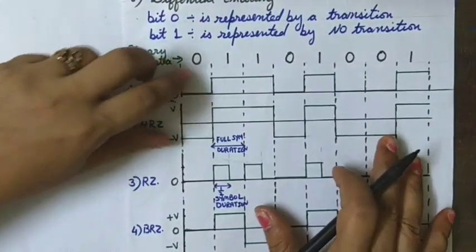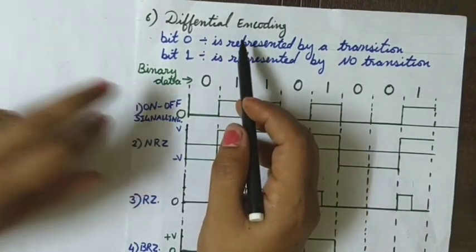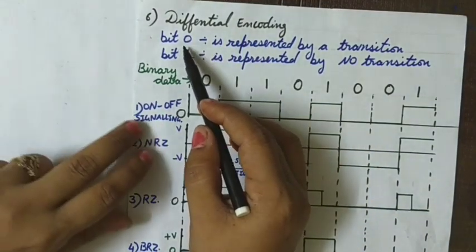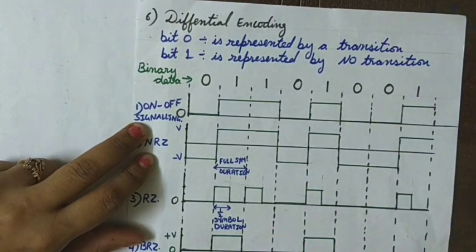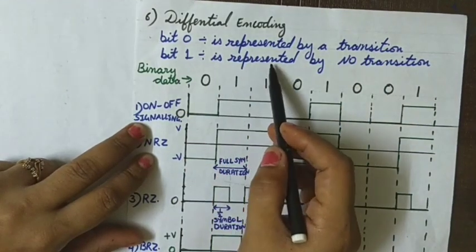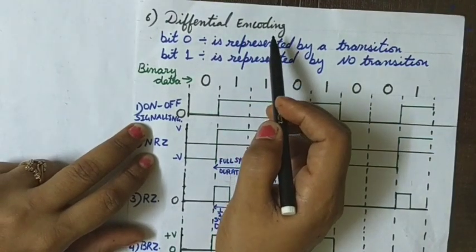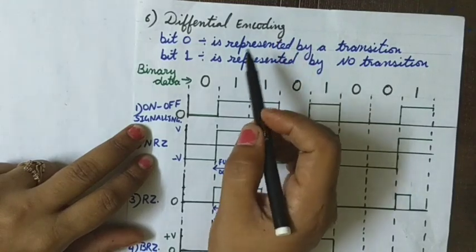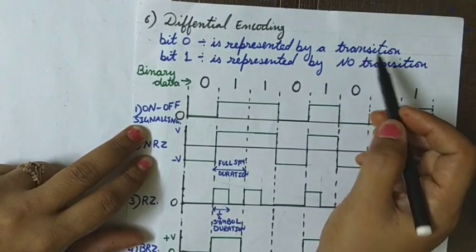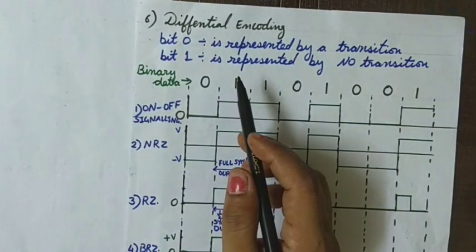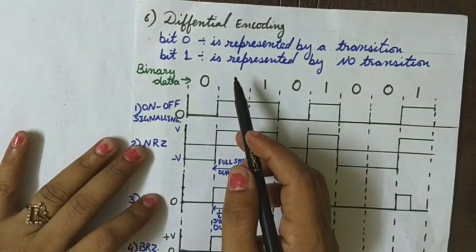The sixth and last is the differential encoding scheme. In this scheme, symbol zero is represented by a transition and symbol one is represented by no transition. A reference bit is used, and relative to that reference a transition is shown. All six different line codes will be made clearer with the help of an example.